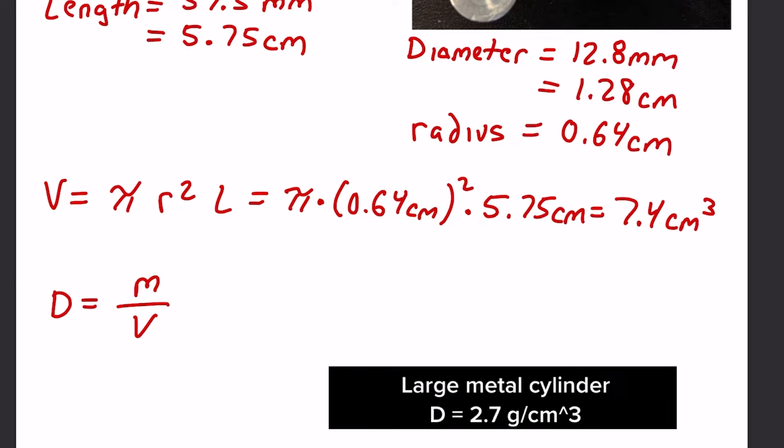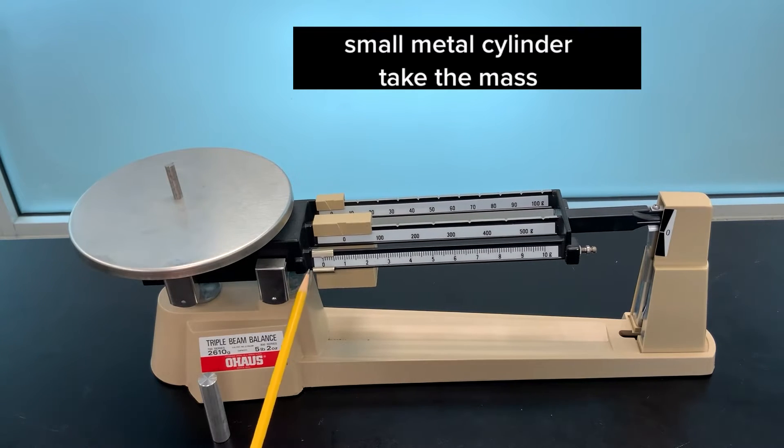And then I can determine the density by taking the mass divided by volume, and I get a density of 2.7 grams per centimeter cubed.